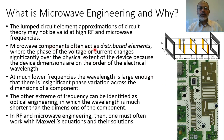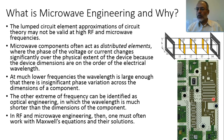Microwave engineering components often act as distributed elements where the phase of the voltage changes significantly over the physical extent of the device, because the device dimensions are on the order of the operating wavelength. For example, a length slightly less than lambda over 4 would be capacitive, while a length slightly greater than lambda over 4 would be inductive. A length around lambda over 2 would be equivalent to a series L and C circuit. Every part in this case will be equivalent to a circuit element — that is what we call a distributed element.